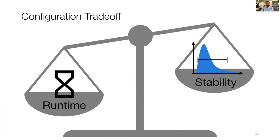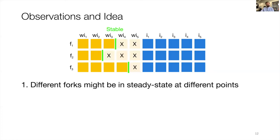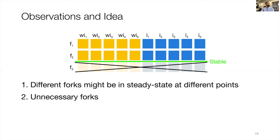Ultimately, configuring microbenchmarks is a trade-off between runtime and stability. We made the following observations that led to the idea of our paper. First, different JVMs — different forks — might be stable at different points in time, meaning at a different number of warm-up iterations, and we might run warm-up iterations that are not necessary to reach the stable state. Additionally, when all measurements are already stable, we might run too many forks in the current version of JMH that do not add to stability of the results — so we waste time there as well.